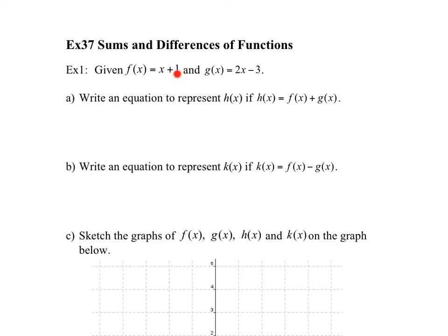So given f of x equals x plus 1, and given that g of x is 2x minus 3, what you've got to do is basically find h of x, which is f plus g. So h of x is equal to the sum of f plus g. This is f, this is g, so therefore you have x plus 1, which is f, plus 2x minus 3, which means that h of x is equal to 3x minus 2.